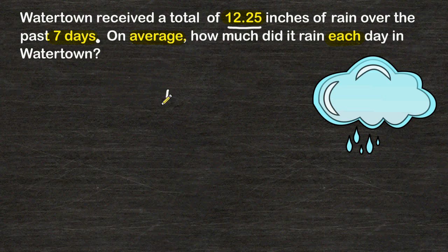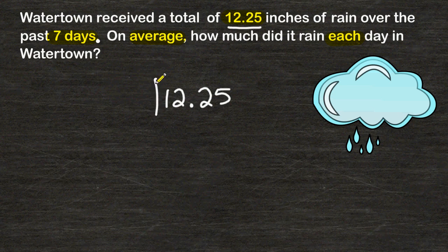They already gave us a total. So we're going to take that total of 12.25 and divide it by 7 to find what the average amount of rainfall was over that 7-day span.